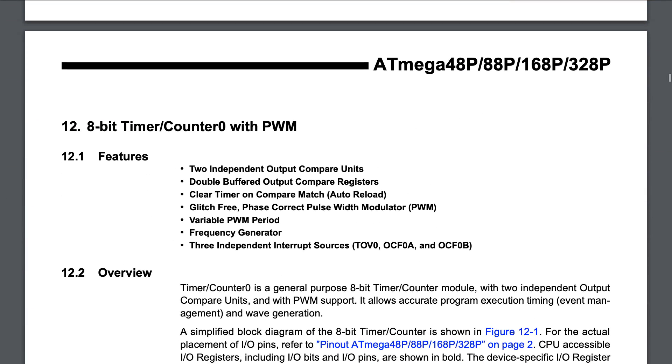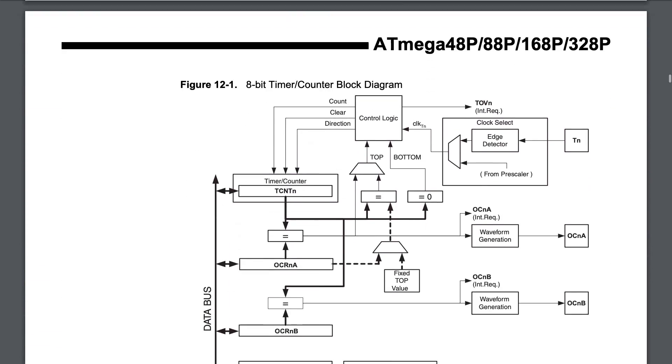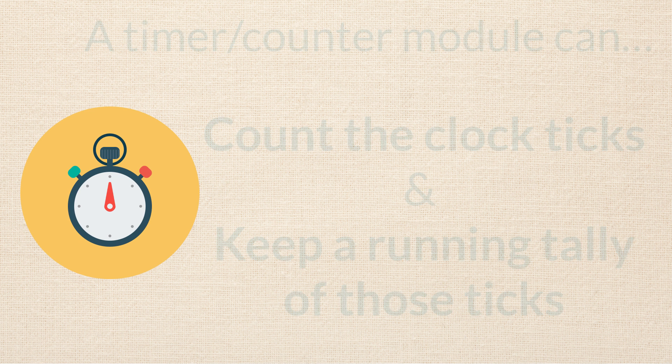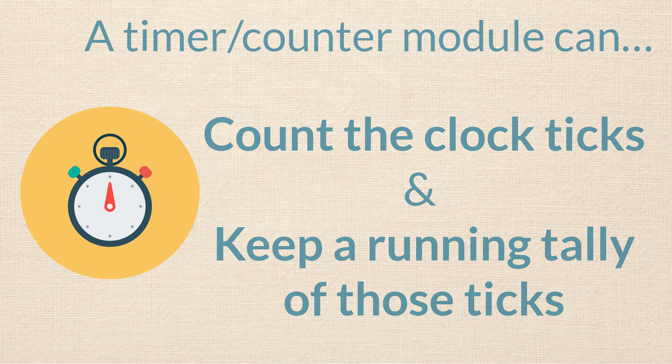Lucky for us, the integrated circuit that the Arduino uses already has this piece of hardware built right into it. It's called a timer counter module. A timer counter module can do a bunch of stuff, but for the sake of this discussion about the millis function, we're interested in a couple specific features. The first is its ability to count the clock ticks and the second is to keep a running tally of those clock ticks.